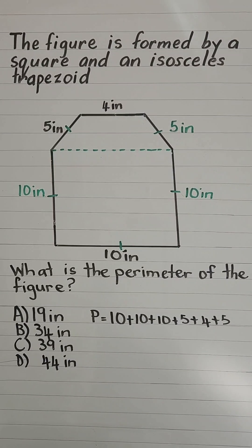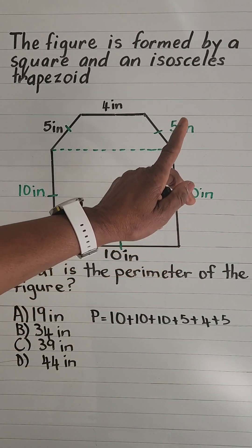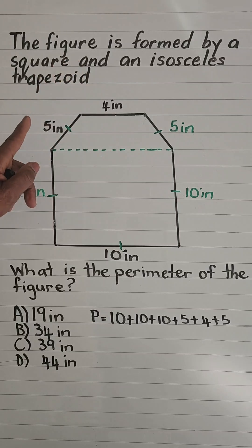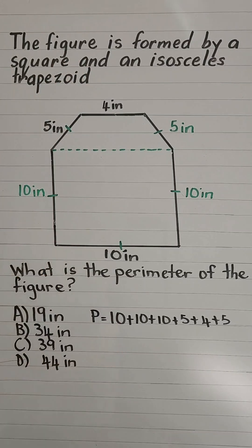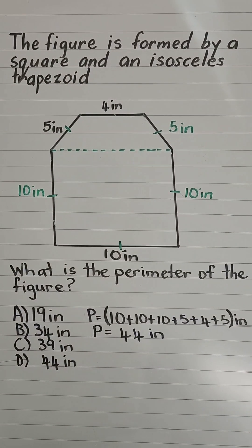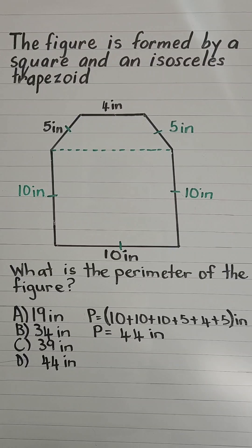Perimeter equals distance around, so it is 10 plus 10 plus 5 plus 4 plus 5 plus 10. Perimeter equals 44 inches. Correct choice: D.